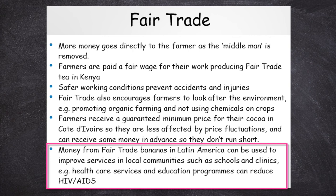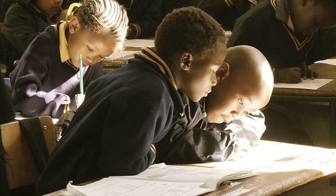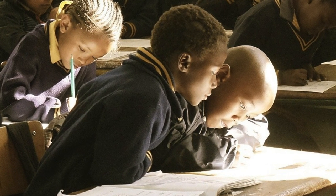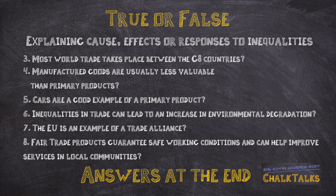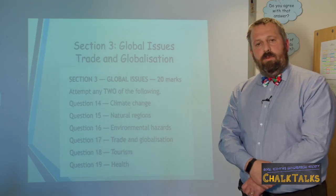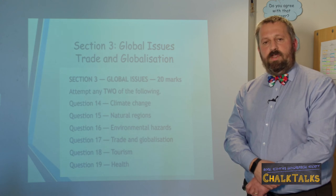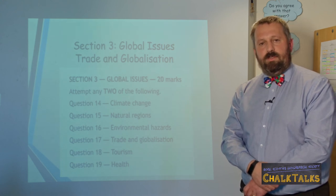Money from the Fair Trade Banana Scheme in Latin America can also be used to improve services in local communities like schools and health clinics. For example, healthcare services and education programmes have been set up to help reduce the spread of HIV-AIDS in some of these Fair Trade Scheme member states. That concludes the video for the Trade and Globalisation topic of the National 5 Geography course. Thank you for listening.